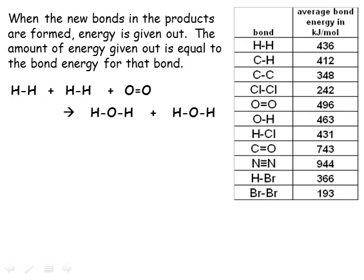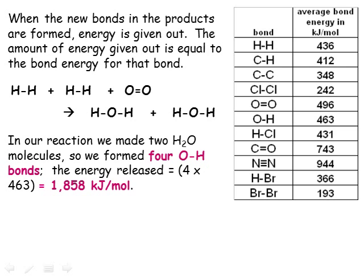Now we need to consider the energy that will be released when the bonds between the hydrogen and oxygen atoms are made to form the two water molecules. We make 4 oxygen-to-hydrogen bonds, and from our table of average bond energies this will release 4 times 463, which is 1852 kJ per mole.